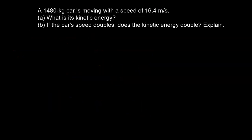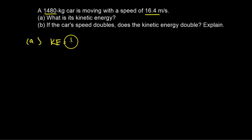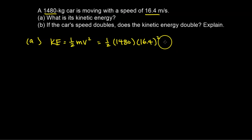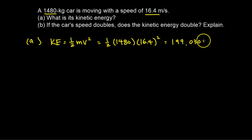Here's another question dealing with kinetic energy. A 1,480 kilogram car is moving with a speed of 16.4 meters per second. What is the kinetic energy? Using KE = ½mv², we calculate ½ × 1,480 × 16.4², which gives us 199,030 joules.